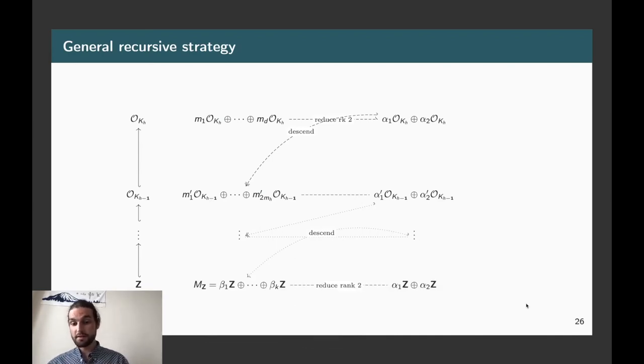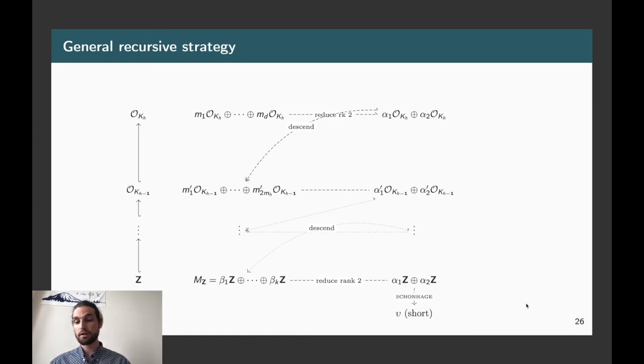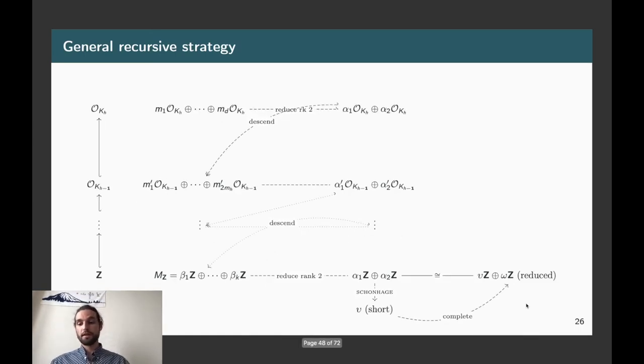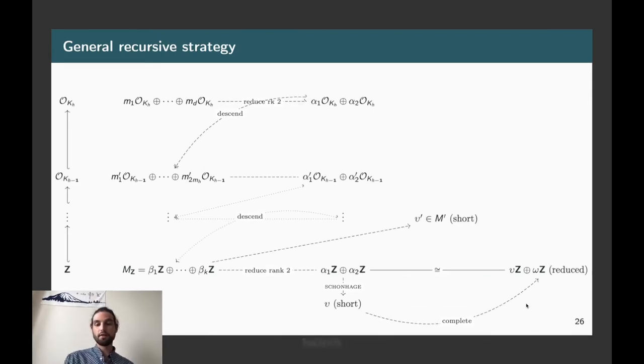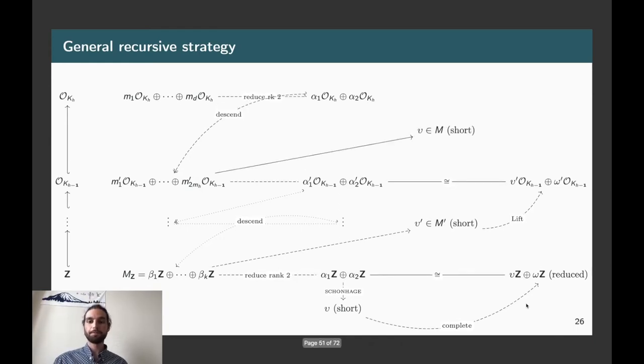And when Z is reached, we can use Schönhage's algorithm to completely reduce these rank 2 vectors. So, we find a short vector v, we complete it in a reduced basis. And then, we plug that back, and it will yield a short vector of this final lattice, that we will lift using this generalization of Euclidean procedure. And we continue that, we go up and up and up. And at one point, we will be able to have fully reduced the rank 2 projected sublattices appearing in the reduction. So, this is the basic idea on how this recursive strategy over the tower of number fields is working.